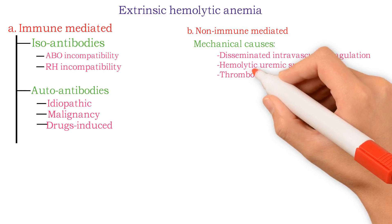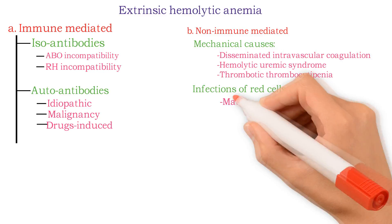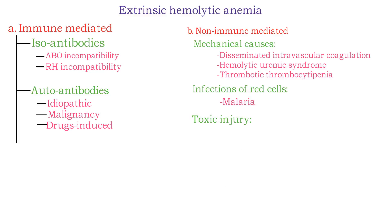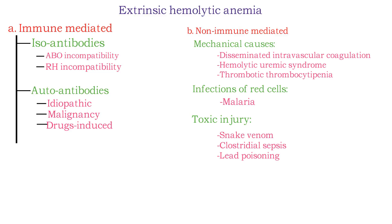Hemolytic uremic syndrome, thrombotic thrombocytopenia, infections of red cells like malaria, toxic injury from snake venom, clostridial sepsis, lead poisoning, membrane lipid abnormalities like abetalipoproteinemia, and splenic sequestration or hypersplenism.